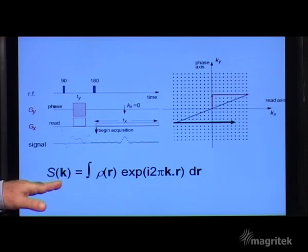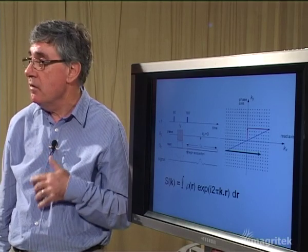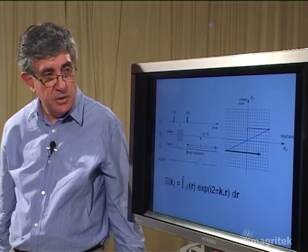And so all we have to do is to take that signal and Fourier transform it in two dimensions. We perform a Cartesian Fourier transformation in two dimensions to get the image.